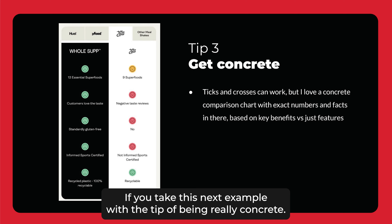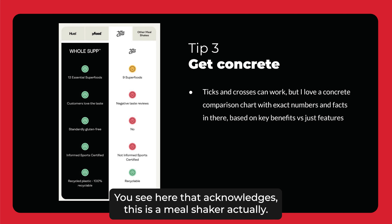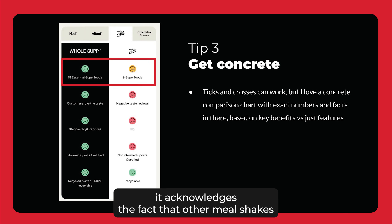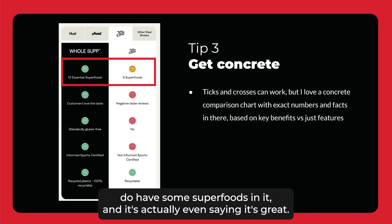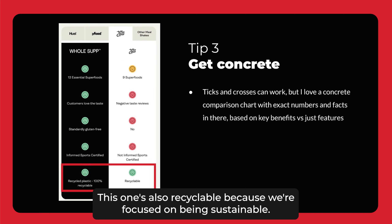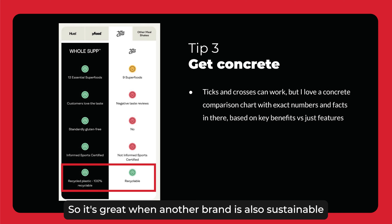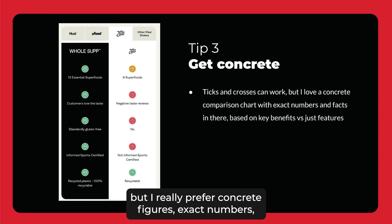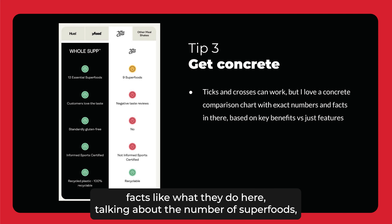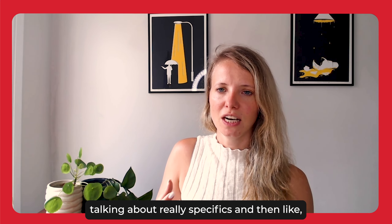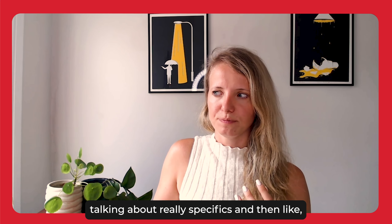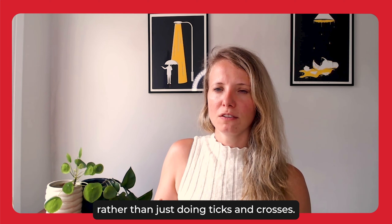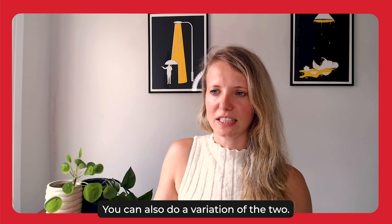If you take this next example, with the tip of being really concrete — you see here that it acknowledges, this is a meal shake, that other meal shakes do have some superfoods in them. It's actually even saying it's great when another brand is also recyclable and sustainable. When it comes to being concrete, ticks and crosses can work, but I really prefer concrete figures — exact numbers, facts — like talking about the number of superfoods or specifics around taste. I think that just helps customers understand a bit more rather than just doing ticks and crosses. You can also do a variation of the two.